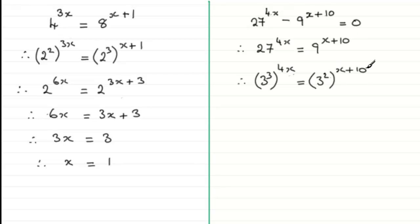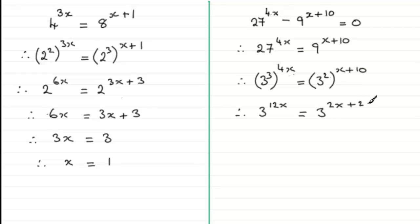What we do next is simplify by multiplying out the 3 with the 4x, and the 2 with the x plus 10. So we have 3 to the power 12x equals 3 to the power 2x plus 20. Now we've got two terms to the same base, so we can compare the powers.